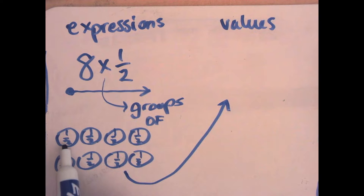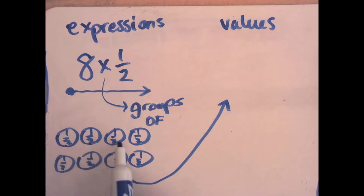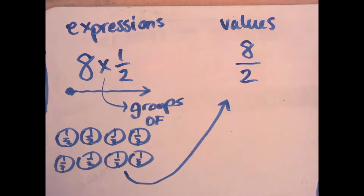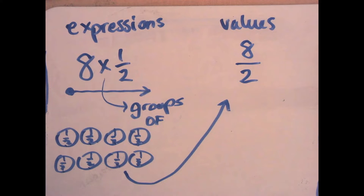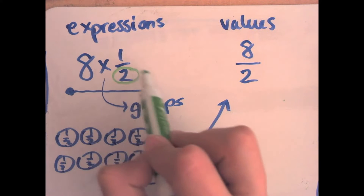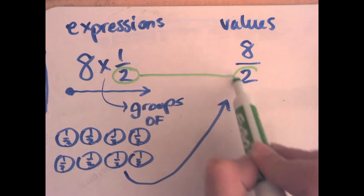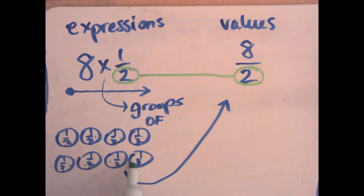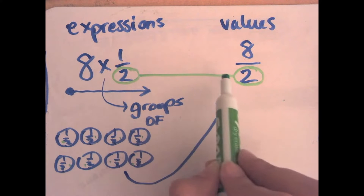One half, two halves, three halves, four halves, five halves, six halves, seven halves, eight halves. We look at these eight halves and then we make some observations. We observe that the denominator is staying the same — we are not changing the size of the piece. The denominator stays the same.